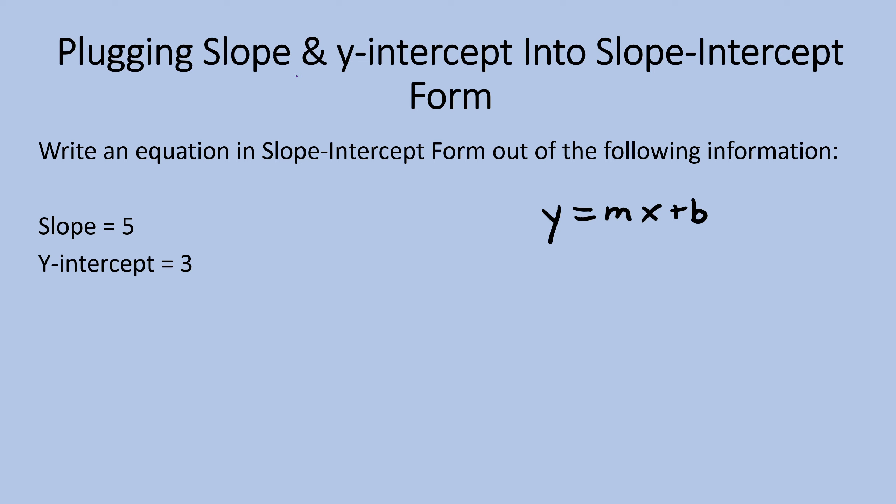When we go back to our original equation and color code it, we can start thinking about plugging in values. We know that our slope or m is 5, so we can go ahead and replace our m with 5. We also know that our y-intercept or b is 3, so we can replace b with 3. Now we can fill in and bring down the rest of our equation.